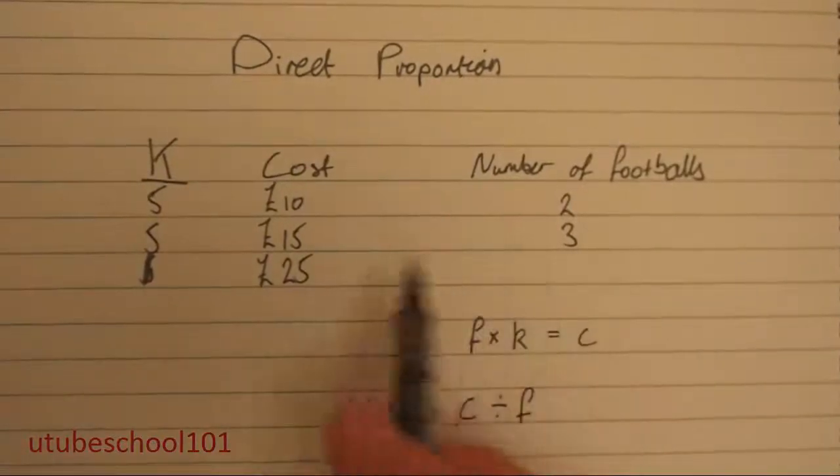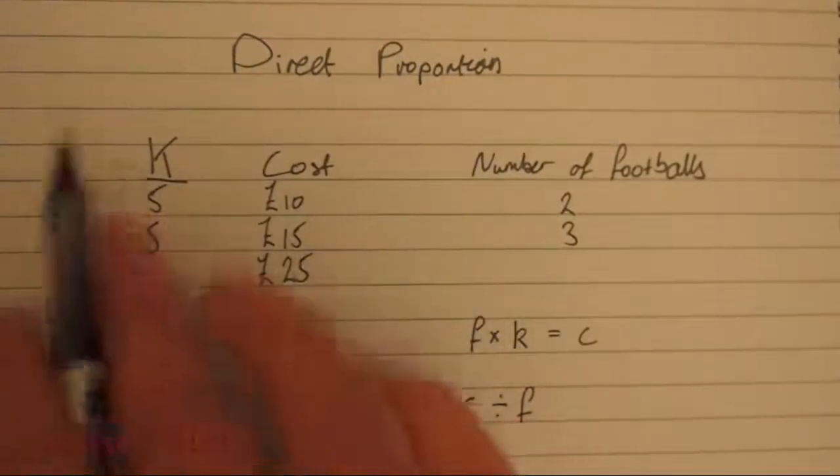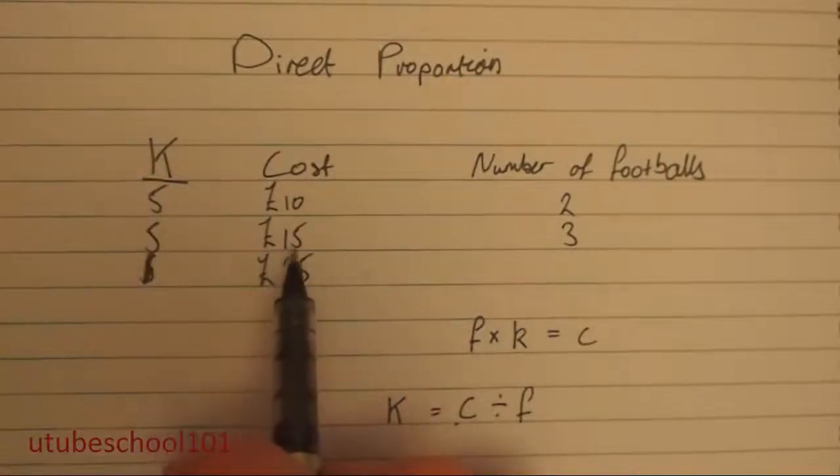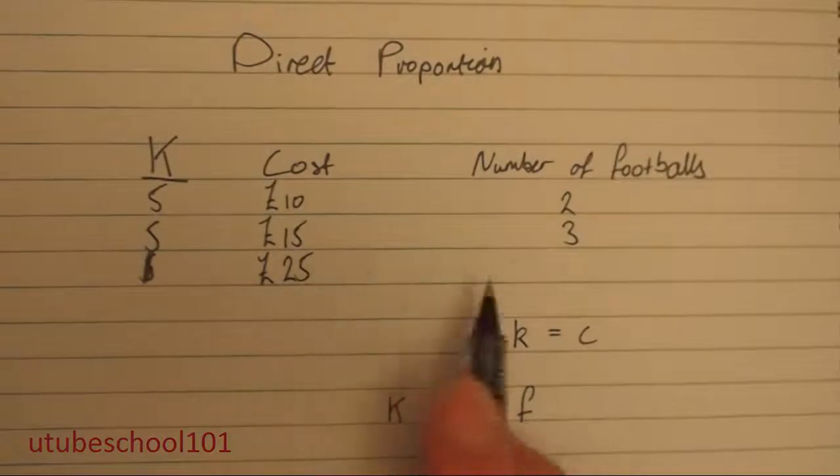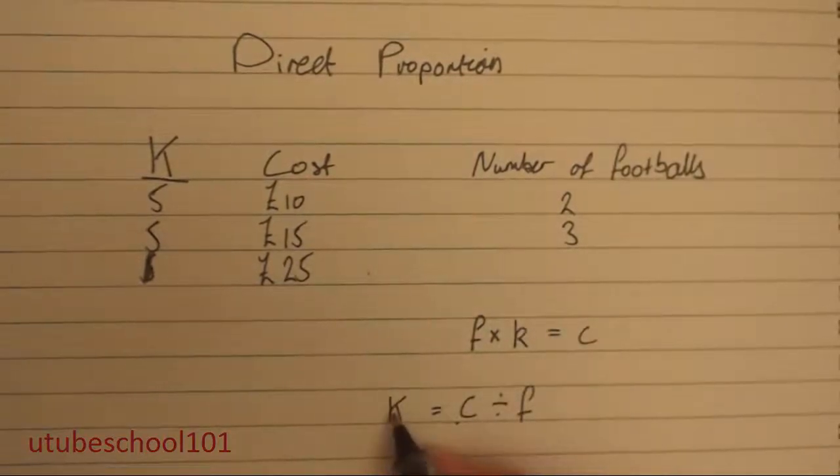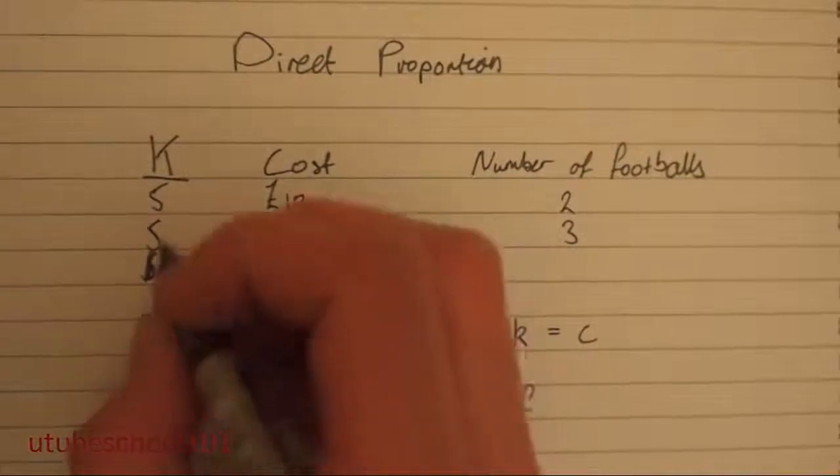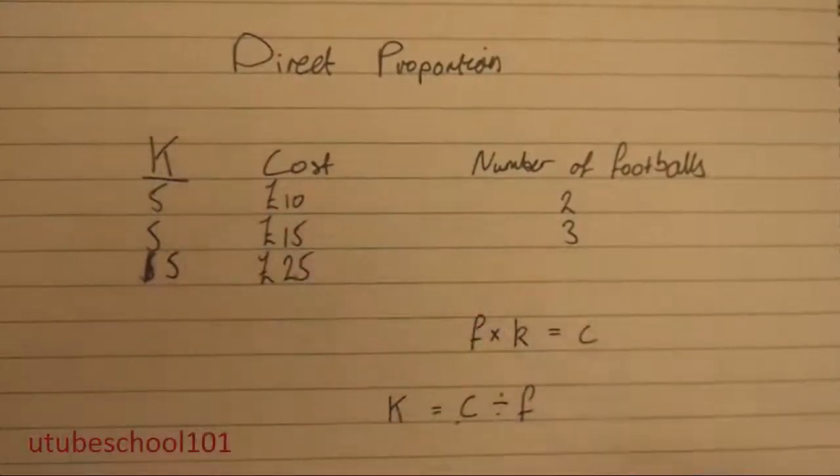Okay, so the cost, so let's use one of our examples. We're pretending k isn't here. So fifteen pounds, which is c, divided by the number of footballs, which is f, we get our k.